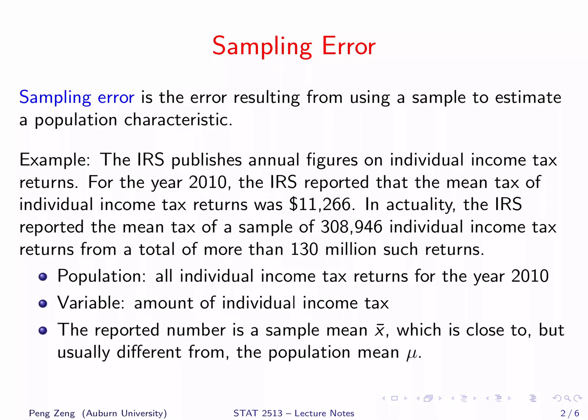The population contains all individual income tax returns for the year 2010. The variable of interest is the amount of individual tax return. The reported number is a sample mean x̄. It is expected that x̄ is close to the population mean μ. However, usually, the sample mean cannot be exactly equal to the population mean. The difference between the sample mean and the population mean in this problem is referred to as sampling error.